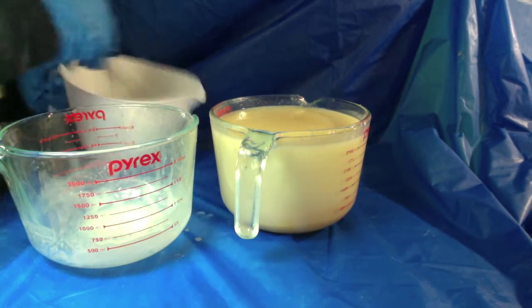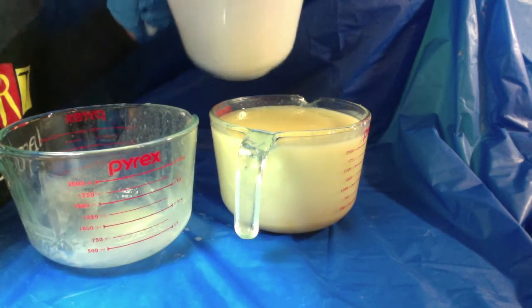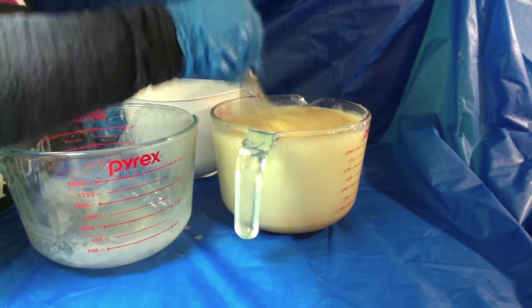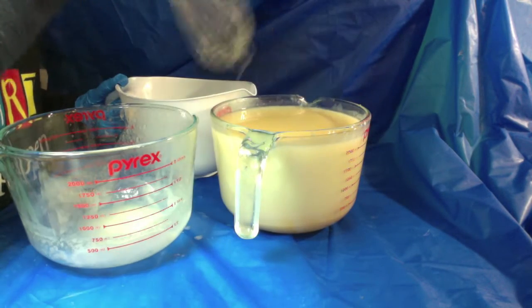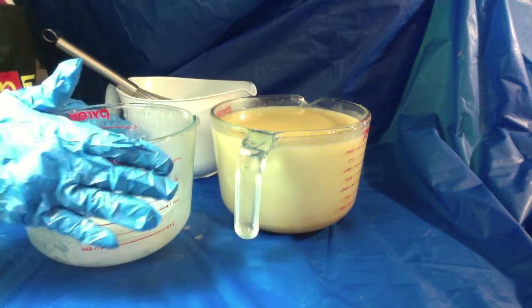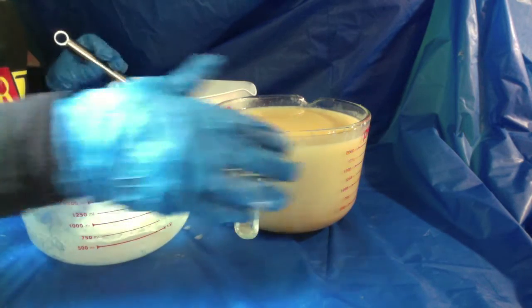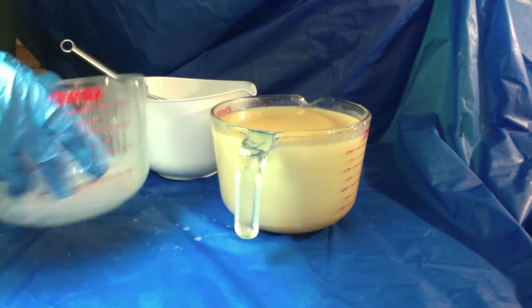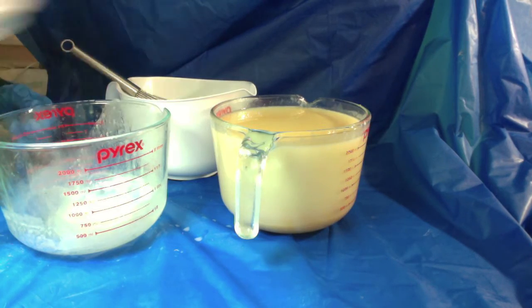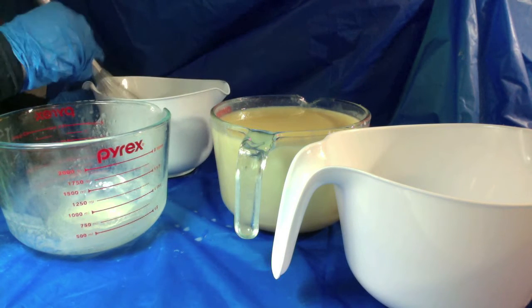I've mixed this up with the stick blender. You can see it's nice, like pudding consistency. Nice color. I've added the fragrance to this one. The fragrance is not in that one, just in case it darkens. I'm not going to add it to the piping. I'm going to split this up in two more parts again. I'm going to put the piping aside for now.